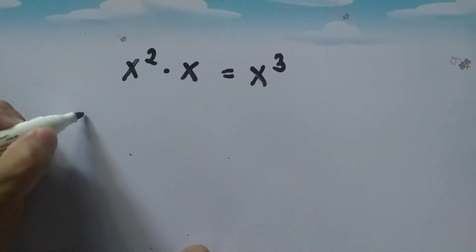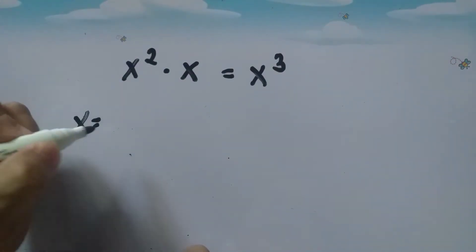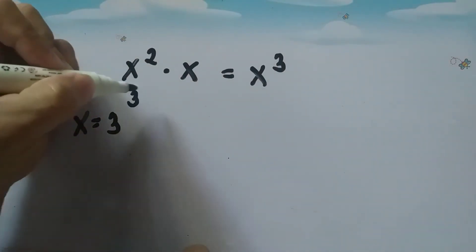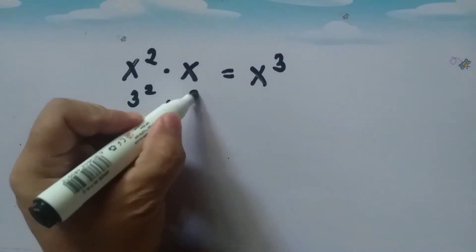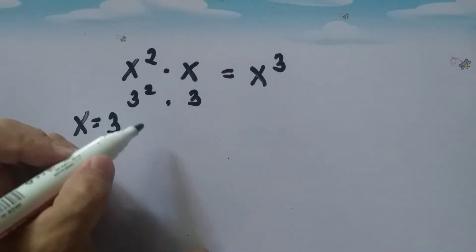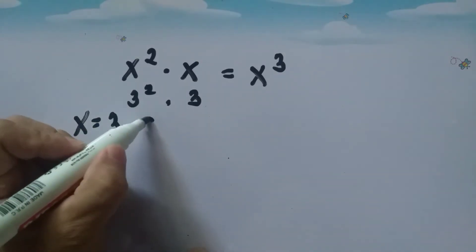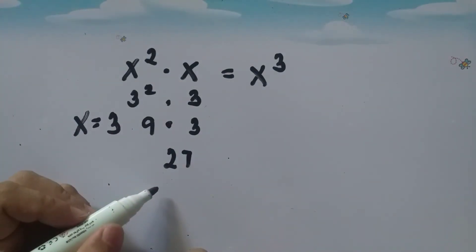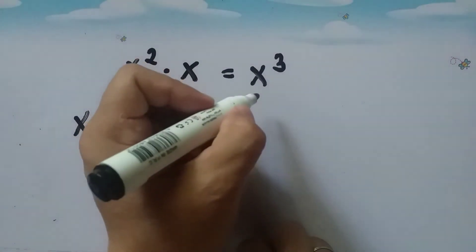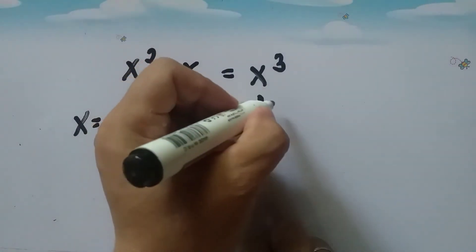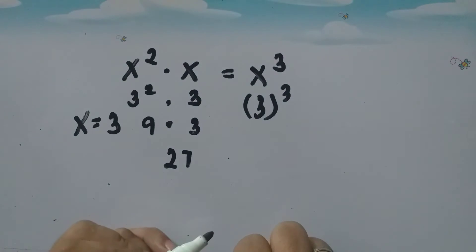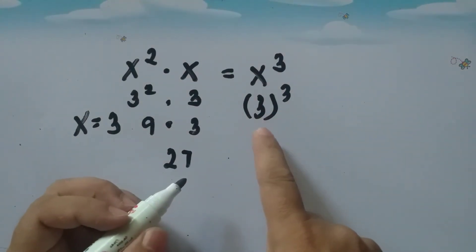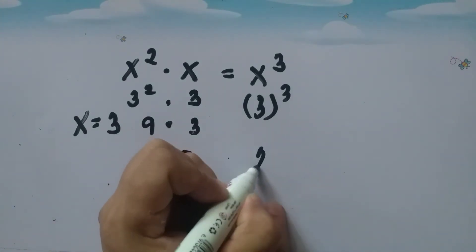Let us check. Let's say x is equal to 3. So we have 3 squared times 3. 3 times 3 is 9, times 3 is 27. How about x cubed with x equal to 3? That is 3 cubed, which means 3 times 3 times 3 — also 27. Both sides match.